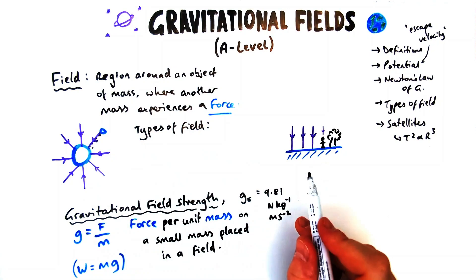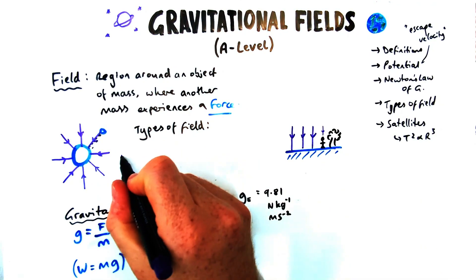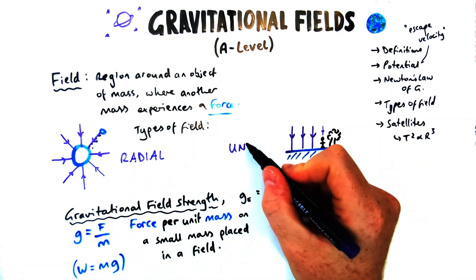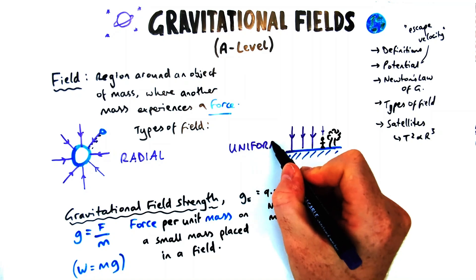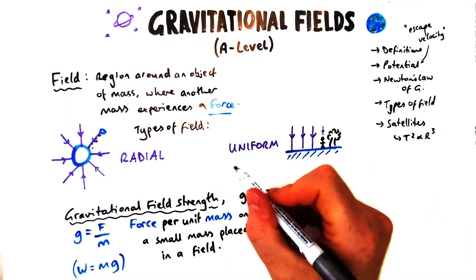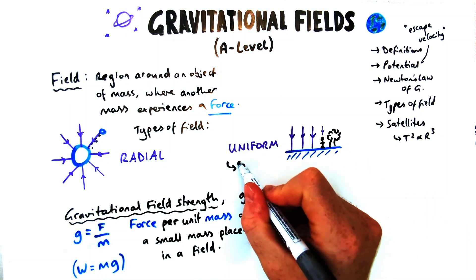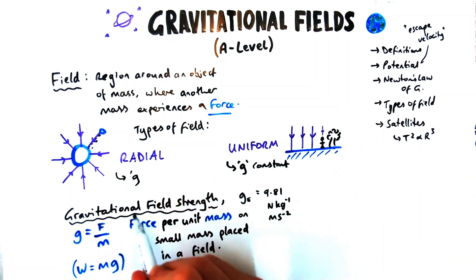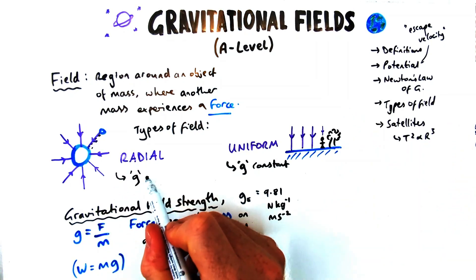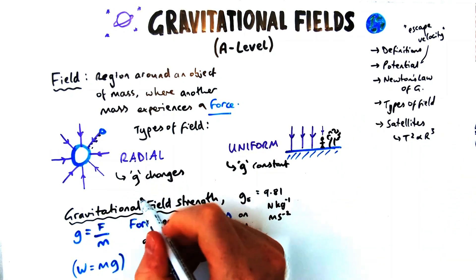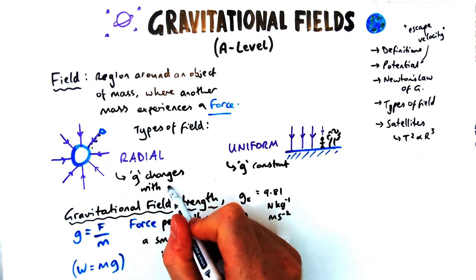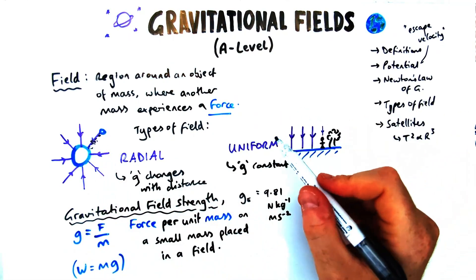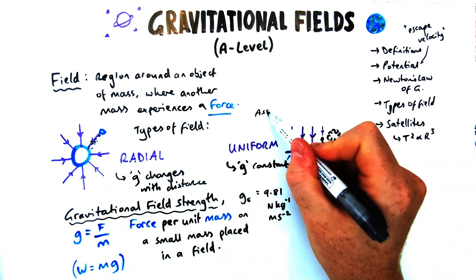There are different types of field. The one on the left is called a radial field, and the one I've just drawn here is an example of a uniform field. Uniform in physics normally means constant or the same — in this case it means g, or field strength, is constant. Whereas for a radial field, g changes with distance; the further away you go, g does actually decrease.